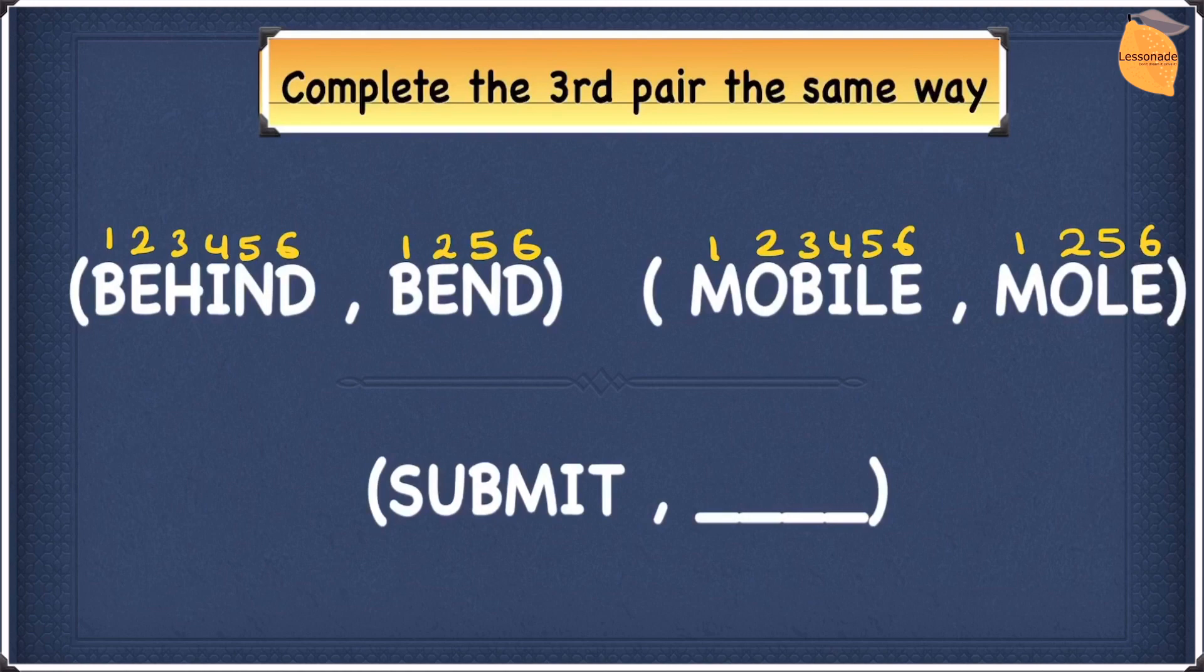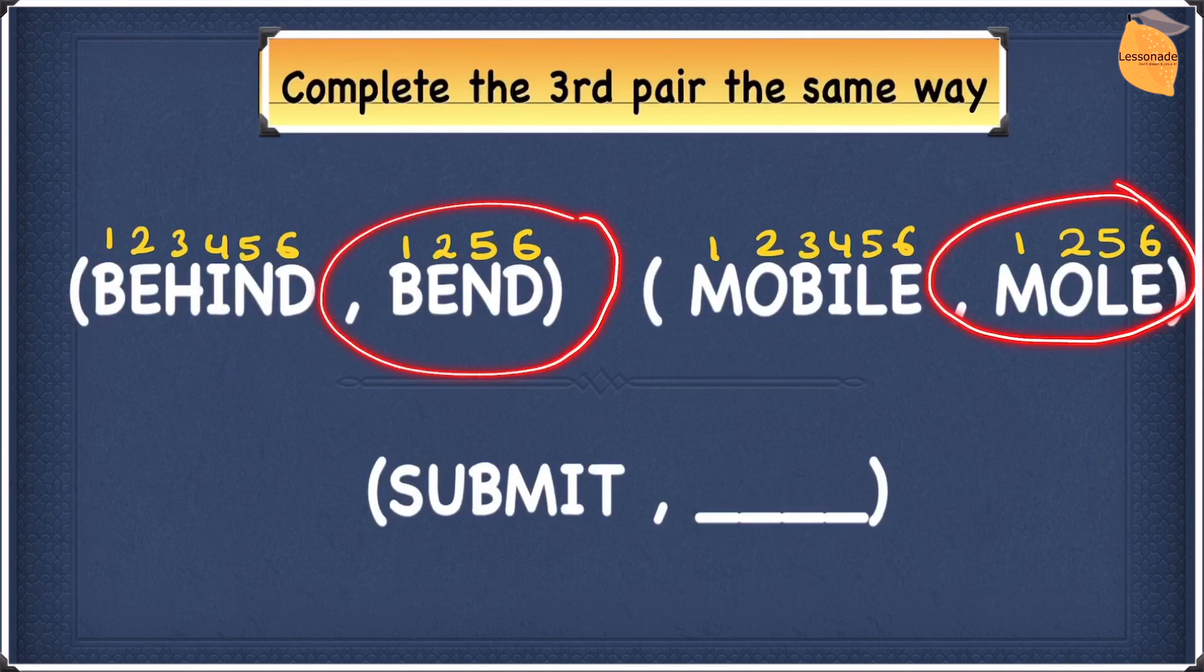Now, we got to check whether they both have the same digits. And as you guys could see, BEND has 1, 2, 5, 6. And MOLE also has 1, 2, 5, 6. So they are right.